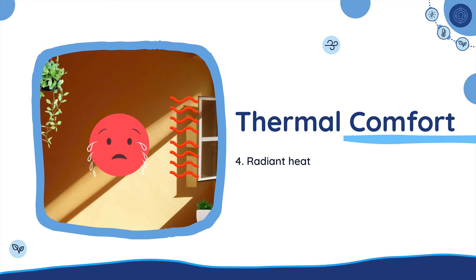Number four is radiant heat. Radiant heat is the type of heat that radiates off a hot object or surface. For example, have you ever been in your car on a hot summer's day and the sun reflecting onto your car has made the inside feel hotter than outside? Or perhaps you've had a fire when camping or you've got an indoor fire at home — standing too close to the flames can make you feel very uncomfortable and too hot. This is the radiant heat from the fire.